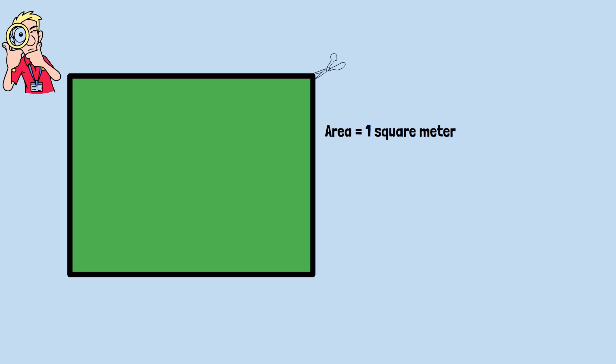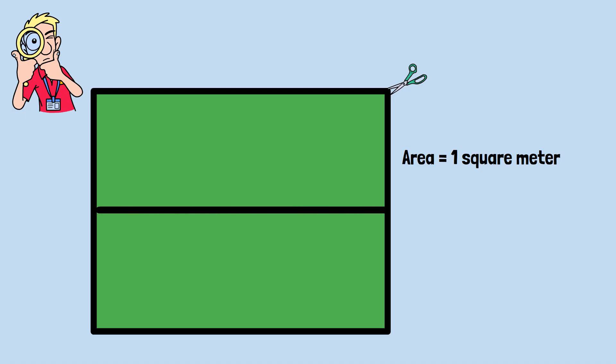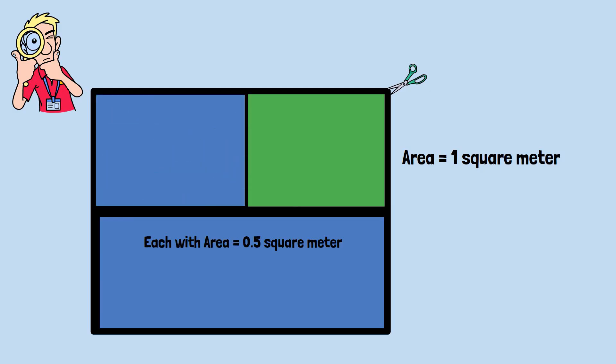Let's see how this works with a visual approach. Imagine a square with an area of exactly one square meter. Now let's slice this square in a very specific way. Cut the square in half. You now have two pieces, each with an area of 0.5. Take one of those halves and cut it in half again.